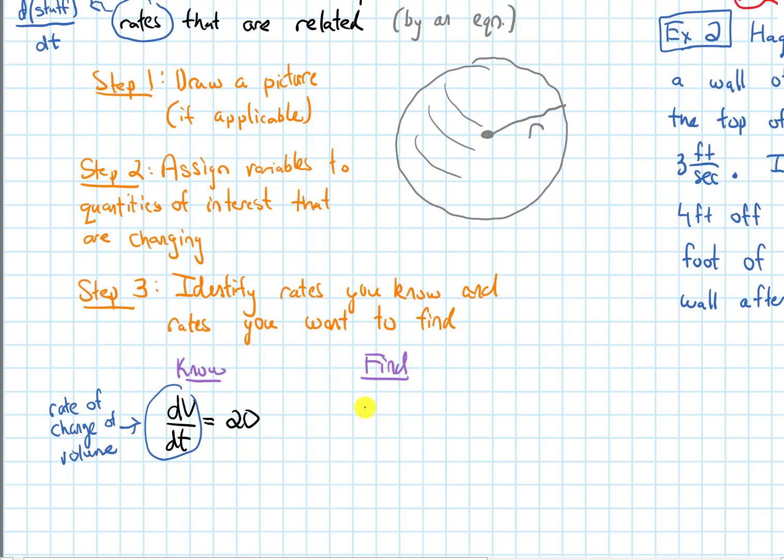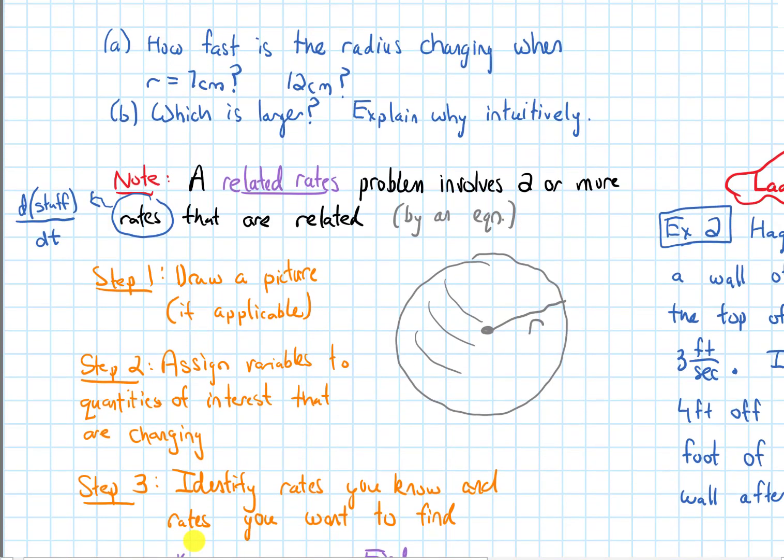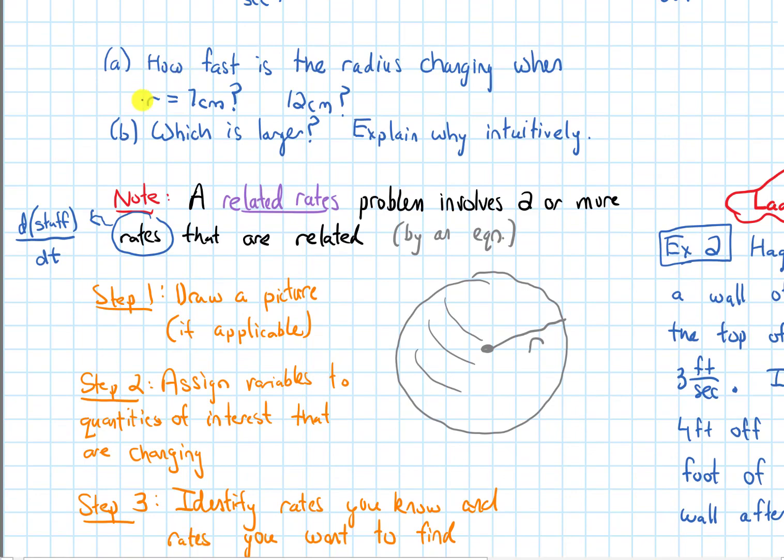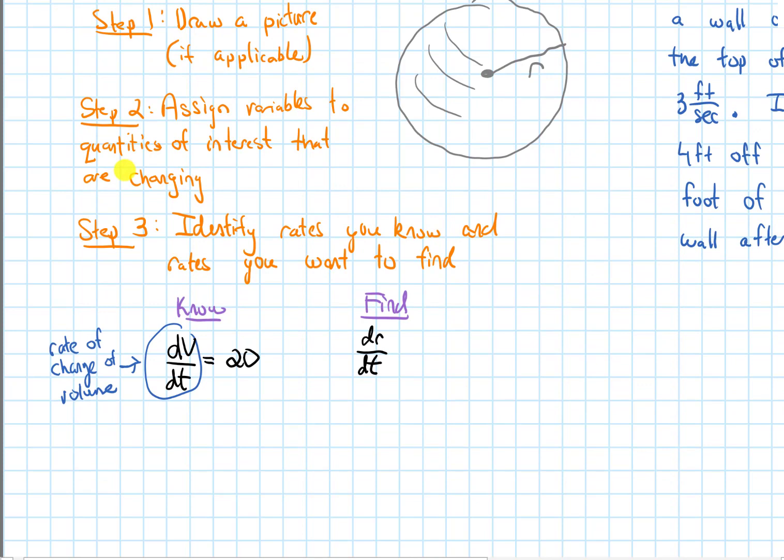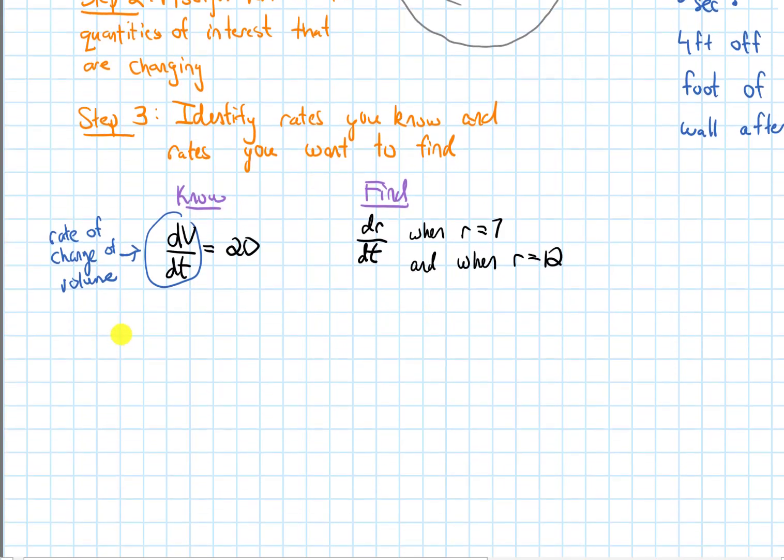I want to find the rate at which the radius is changing. So I want to find dr/dt, and specifically in part A, I want to find dr/dt when the radius is 7 and when the radius is 12. So I want to do this when r is 7 and when r is 12. That's step three.